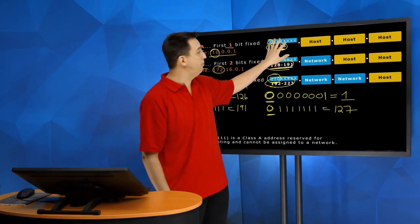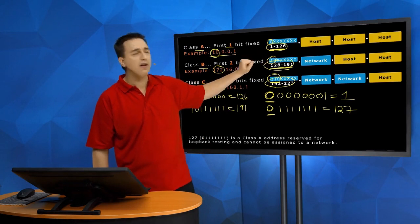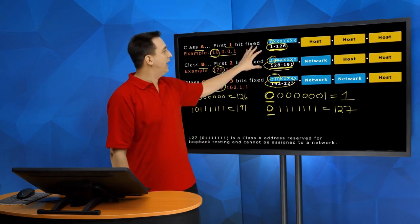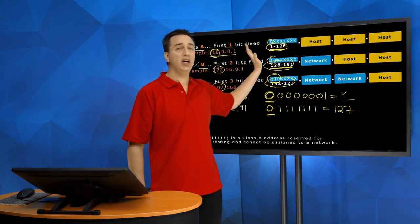First octet, first eight bits represent your network, the street you live on. And then three octets represent the host, the house number. So in this case, we have a street with a ton of homes on it.